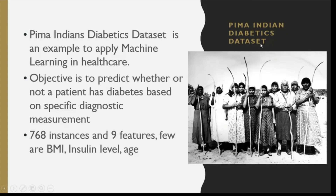Next is the Pima Indian Diabetes dataset. This is also a classic example in machine learning applied to the healthcare sector. The objective is to predict whether a patient has diabetes or not, given nine features such as BMI, insulin level, and age. There are 768 instances in this dataset, and this is again a classification problem.